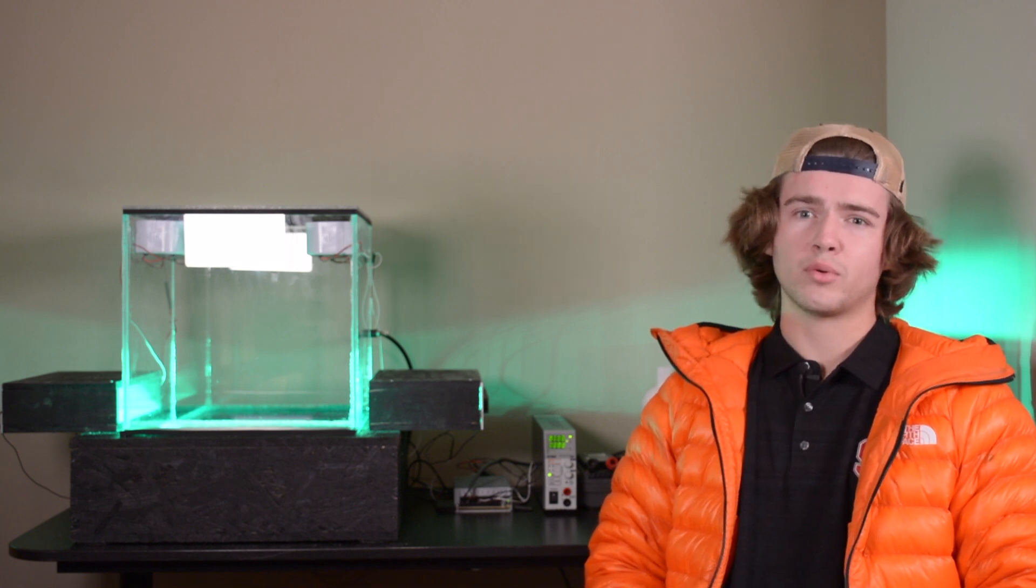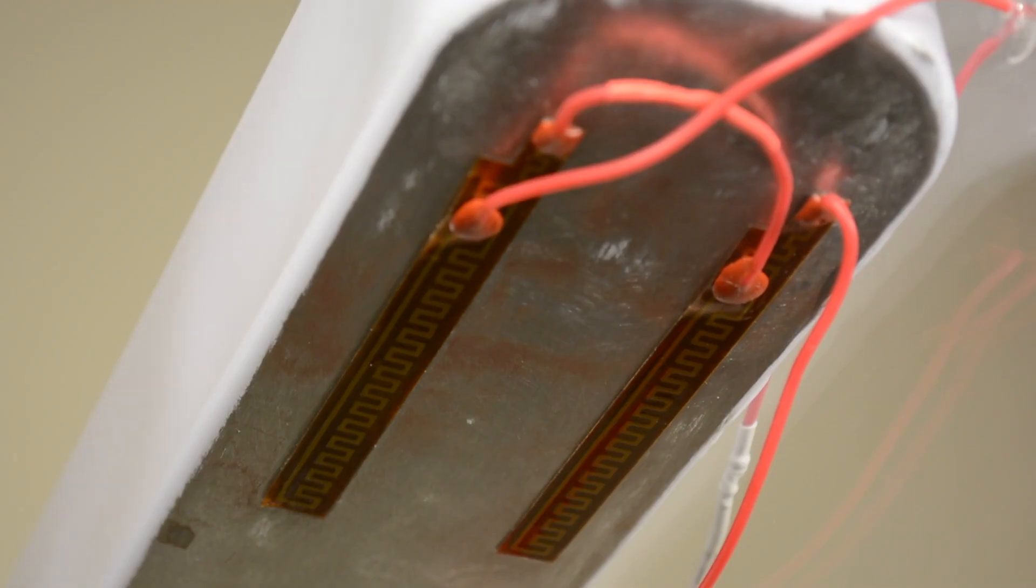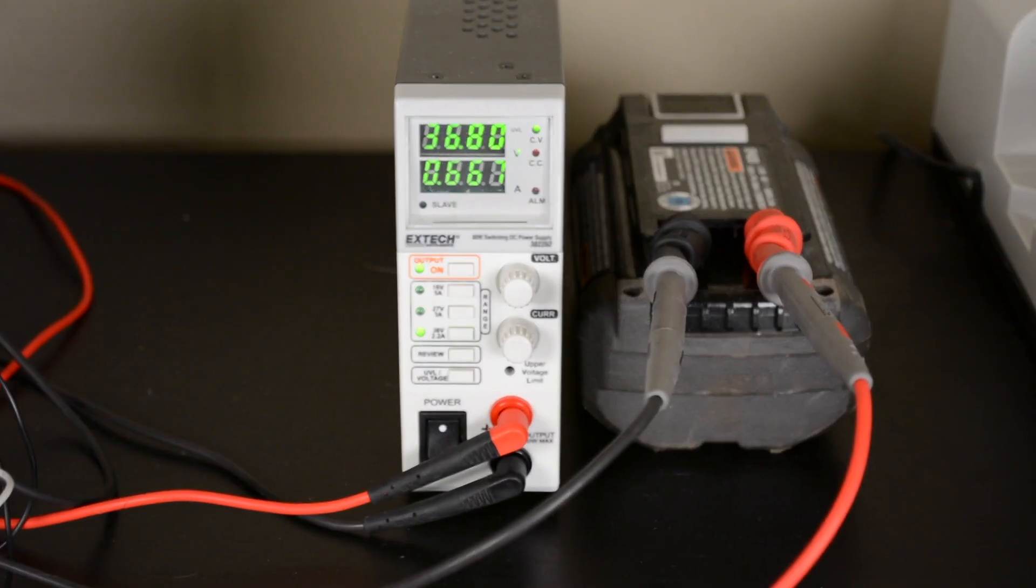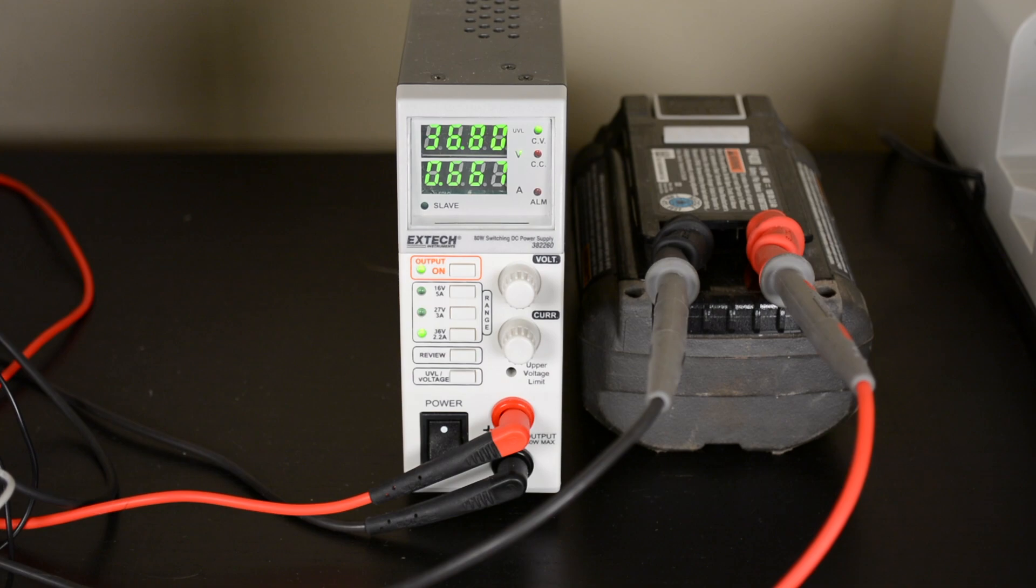Each evaporation reservoir has four polyamide film heaters mounted to the bottom of them and are wired in series independent of each other. One heating element array is run at around 36 volts DC via a variable output power supply while the other is run at around 40 volts DC via a rechargeable battery.